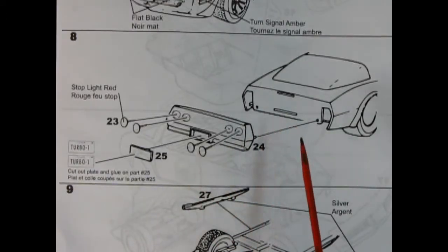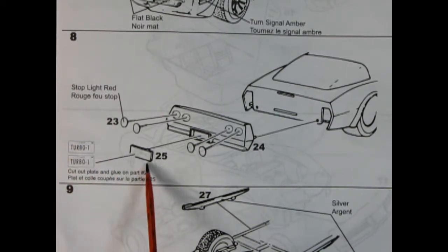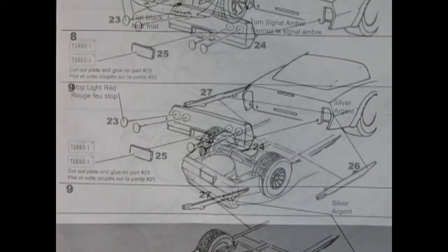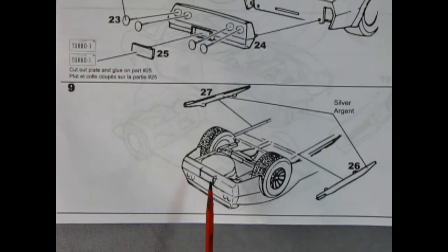And then our license plate. And here it says to cut out plate and glue on part number 25. These say Iowa turbo one. Then once you get the back end figured out, all you need to do is put on these nice side pipes and you're ready to roll.